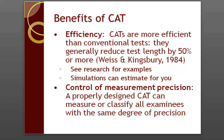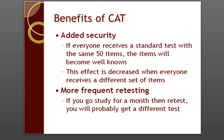CATs also provide control of measurement precision. A properly designed CAT can measure or classify examinees with the same degree of precision, which leads to a new definition of fairness. With conventional tests, each examinee might see the same set of items but could have wildly different levels of precision in their scores — some very accurate, some very inaccurate. With CAT, most students will have the same level of accuracy in their scores, but they will see a different set of items. This different set of items also leads to the benefit of added security, because with a fixed-form test, items become well-known, whereas adaptive testing greatly decreases that effect since everyone could potentially receive a different set of items.